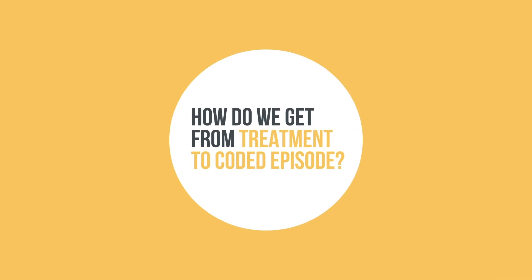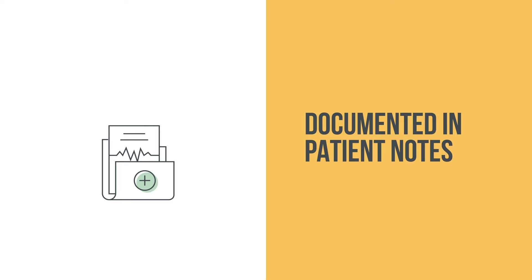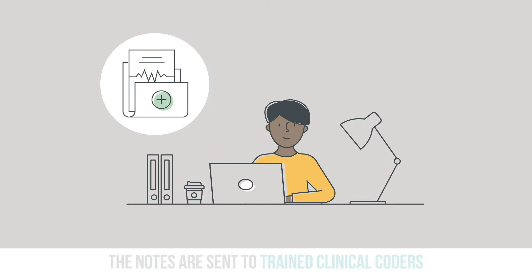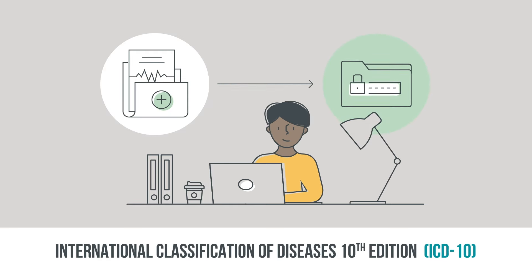So how do we get from treatment to coded episode? All care delivered during a patient episode is documented in the patient electronic records or in paper notes. Once the episode is complete, this information is available to clinical coding, where trained clinical coders carefully read through the notes and allocate the appropriate alphanumeric codes. For diagnoses, they use the International Classification of Diseases, 10th edition, ICD-10, which comprises over 16,000 codes.